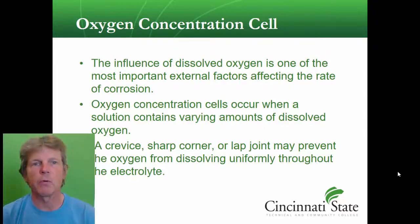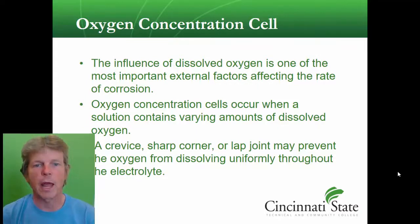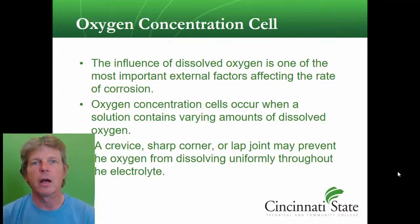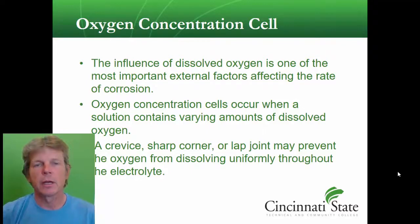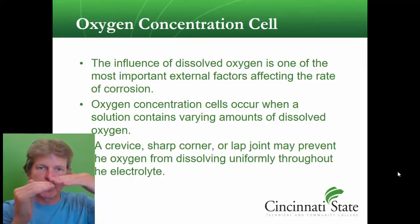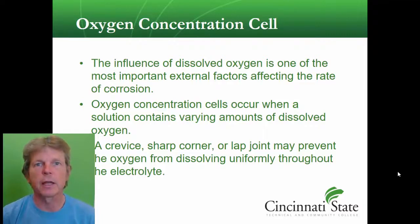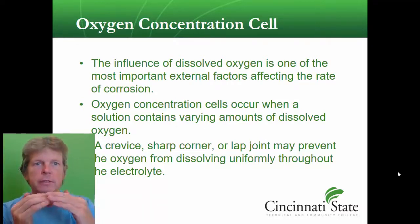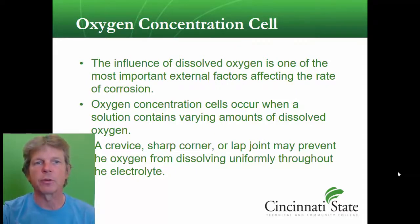Certain places on the airplane will see oxygen concentration cell corrosion. These include crevices, sharp corners, and lap joints. The problem with these areas is they don't allow oxygen to dissolve uniformly — oxygen dissolves in one location, but a trapped joint prevents it from dissolving in another, creating a concentration difference that accelerates corrosion.